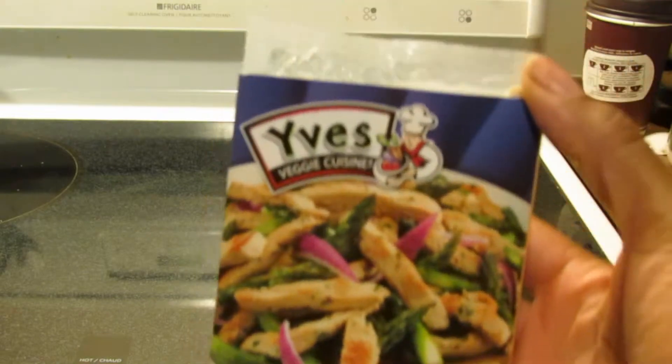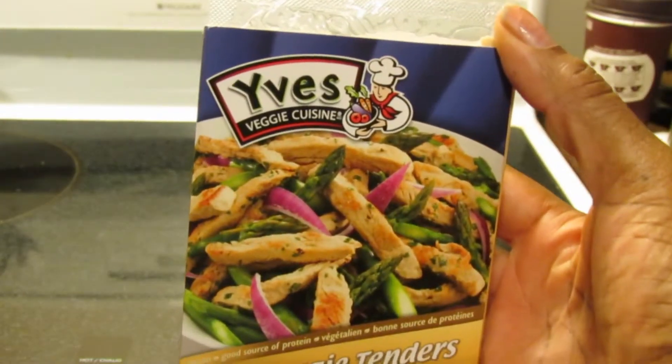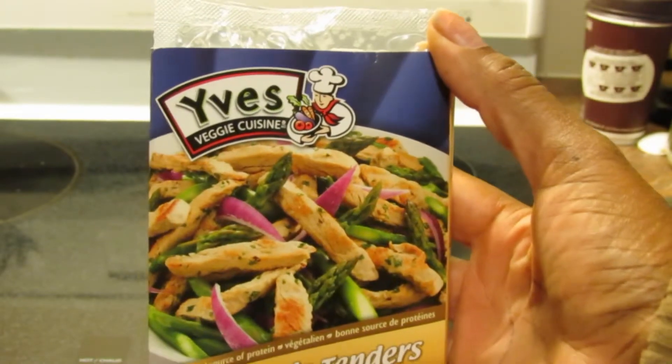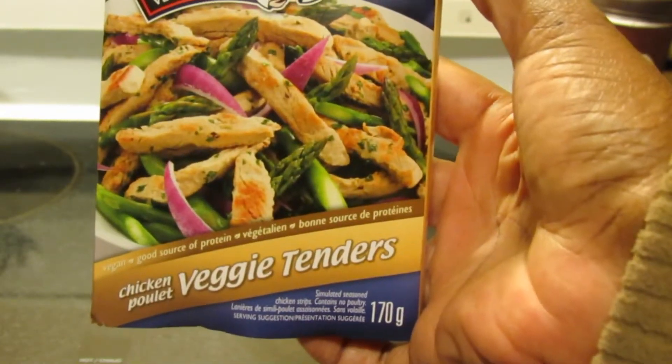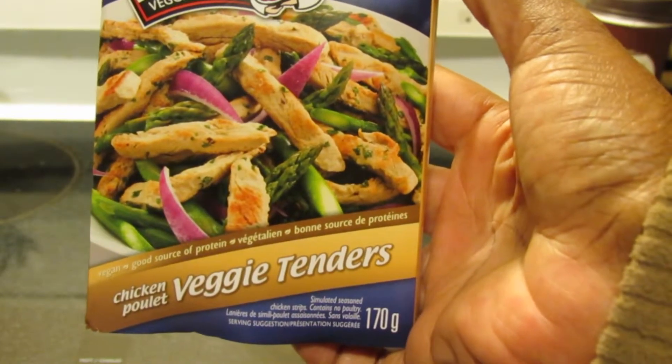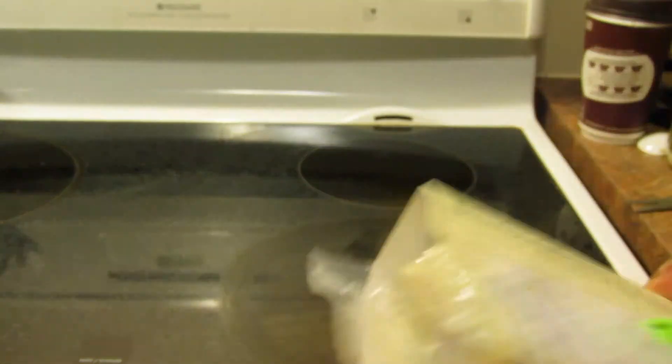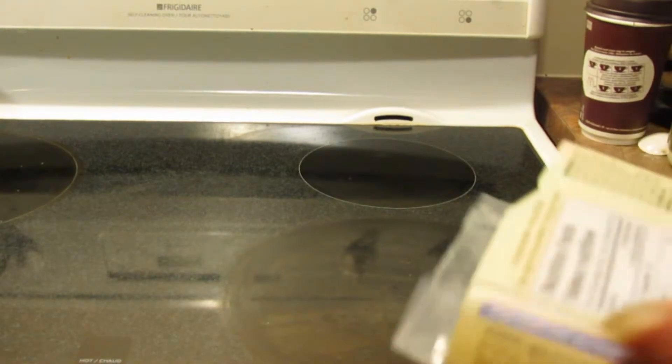Hi guys, I'm going to do another review for you. This is Eve's veggie cuisine, and I'll be reviewing the chicken veggie tenders. What they look like are just sort of strips of chicken breast and you're going to sauté them.